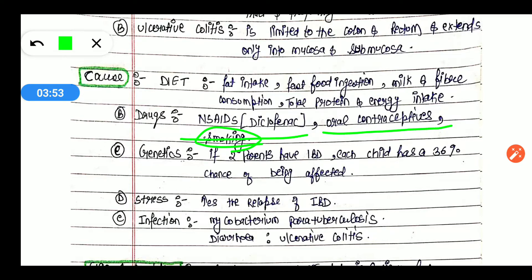These factors can cause IBD. Next point is genetics. IBD has a genetic component, meaning from one generation to another generation this can pass, and there's a 36% chance that it can affect the child. Next point is stress, which can increase the relapse of IBD.